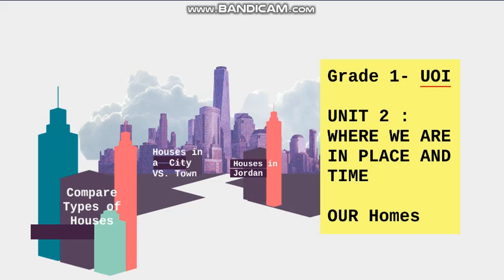Hi grade one students and welcome back. Today we're going to start a new week related to unit two in our UOI, or unit of inquiry classes. This unit is themed as 'where we are in place and time,' and in this video in particular we're going to discuss our homes — the houses that we live in, the ones that are familiar to us and the ones that are not familiar but we should know and learn about.